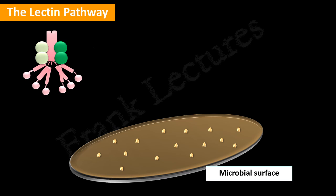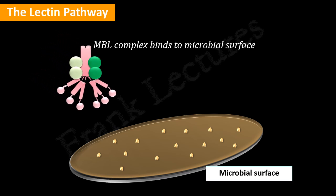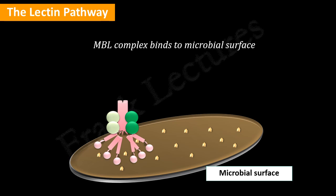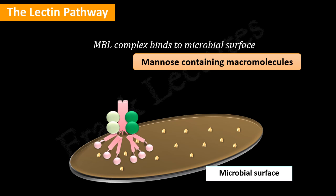In the first step, the MBL complex binds to the microbial surface. This MBL complex binds to the mannose-containing macromolecule on the surface of the pathogen, and this binding triggers the lectin pathway of complement activation.